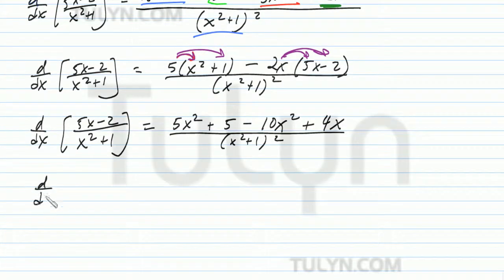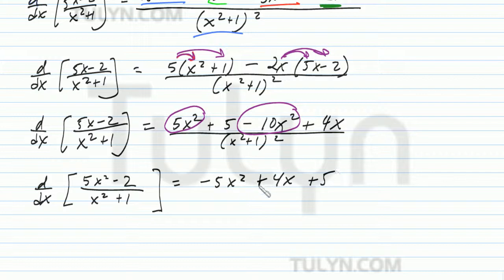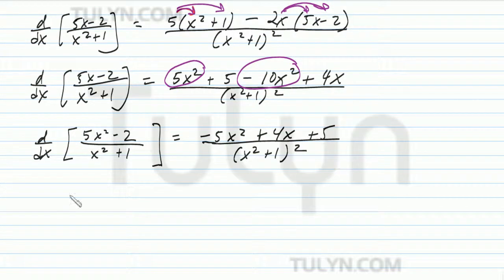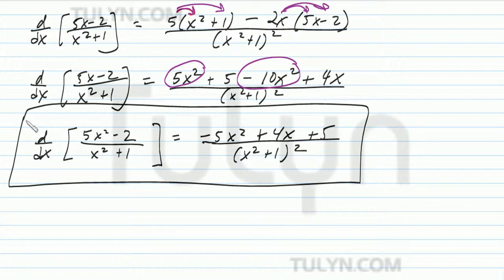So the derivative with respect to x of 5x minus 2 divided by x squared plus 1 is going to equal 5x squared plus negative 10x squared. Combining like terms, that's going to be negative 5x squared plus 4x plus 5 divided by x squared plus 1 squared. And so the derivative of 5x minus 2 divided by x squared plus 1 is negative 5x squared plus 4x plus 5 divided by x squared plus 1 squared.